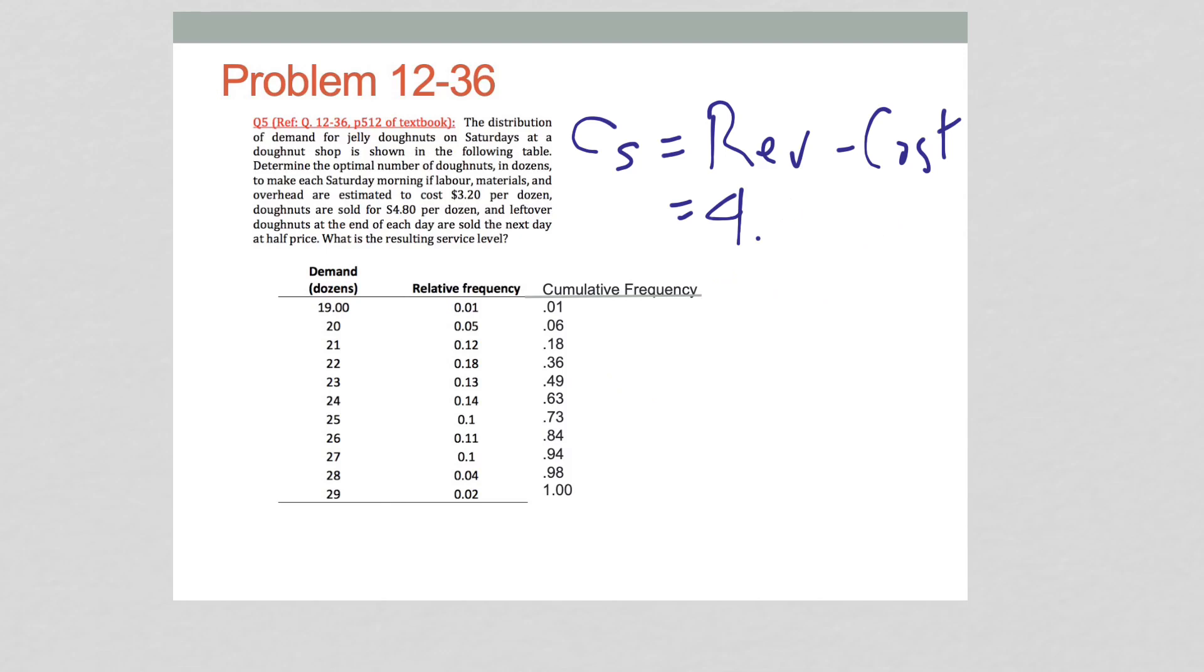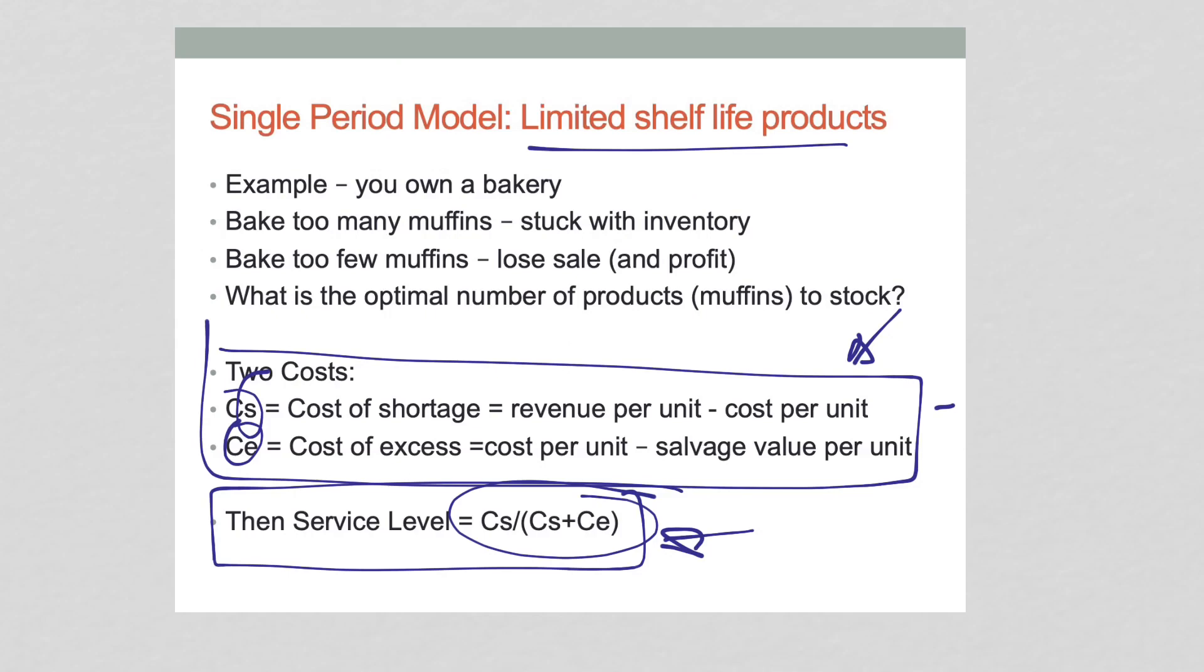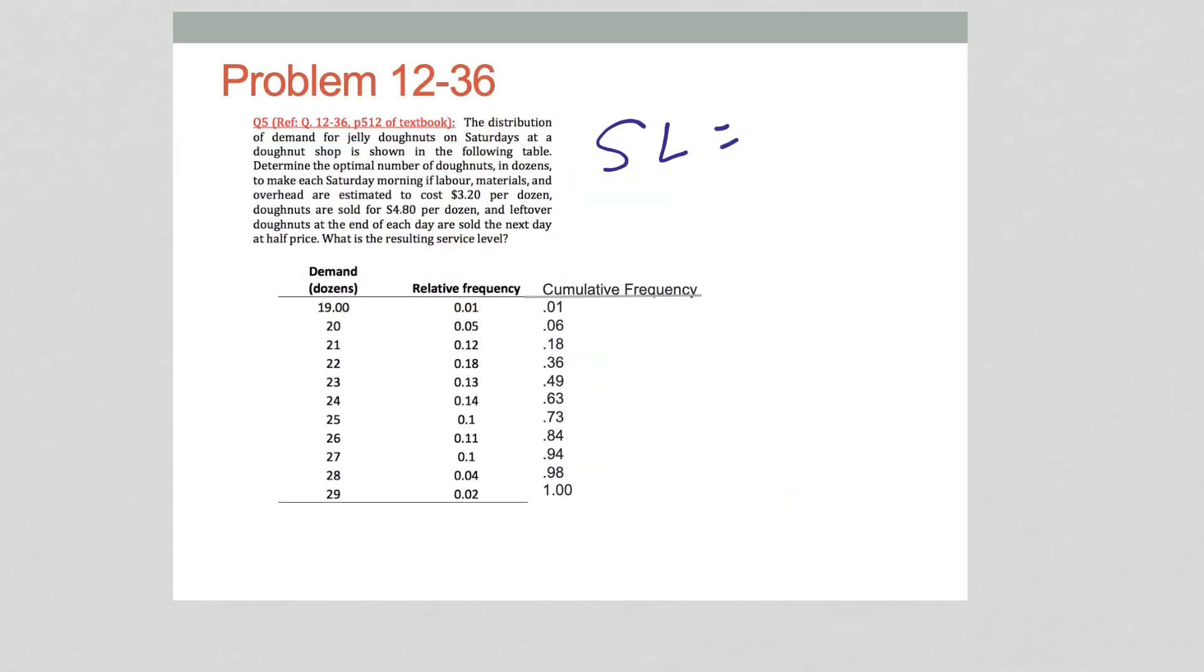Next, the service level. We have our formula. This is the formula we want. Service level equals CS over CS plus CE, which equals 1.6 over 1.6 plus 0.8, which equals 0.667. That's the service level right here.